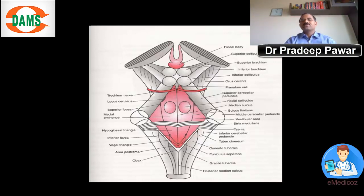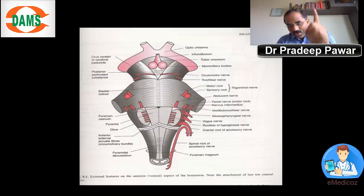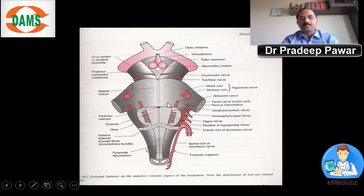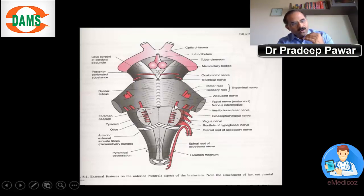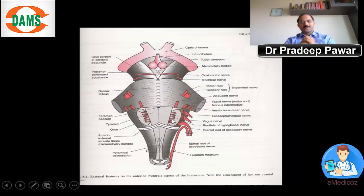The hypoglossal nerve emerges from the ventral aspect of the brainstem. As you know, all nerves emerge from the ventral aspect of the brainstem except the trochlear nerve. The hypoglossal nerve emerges from the medulla between the pyramids and the olives — these are the rootlets of the hypoglossal nerve. What emerges between the olives and the inferior cerebellar peduncle is the 9th, 10th, and 11th cranial nerves, while the 12th emerges between the pyramids and the olives.